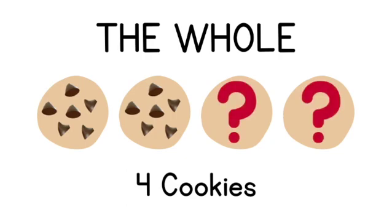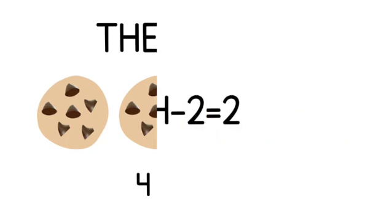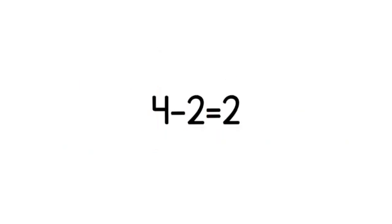In both examples, we know as adults that we can use the equation 4 - 2 = 2, but being able to solve these two problems might require different strategies for your child. We'll talk more about this later.